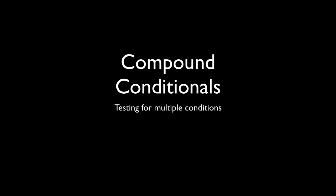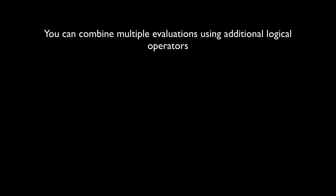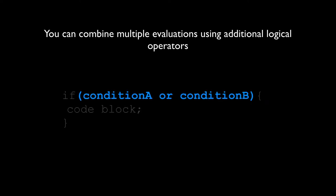Compound conditionals allow you to test for multiple conditions at the same time using additional logical operators. In English: 'if condition A or condition B.' In code, we don't use the word 'or' — we use two pipe symbols. The pipe key is on your keyboard above the Enter key; it's the shifted backslash. You want to make sure you use two pipes — this is a comparative or. Using one pipe means something else, so always use two.